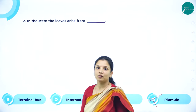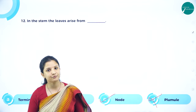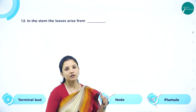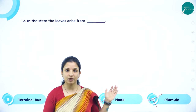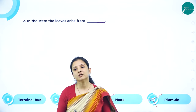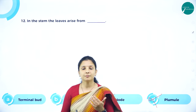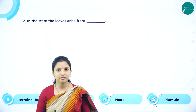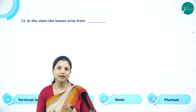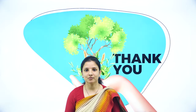This was the session where we learnt about the regions of the root, types of roots, structure of the stem, and some MCQs pertaining to this topic. I hope you understood the session. We shall meet again in the next session to learn about the other parts of the plant — the leaf, arrangement of leaves, venation, and all that. See you in the next session. Thank you.